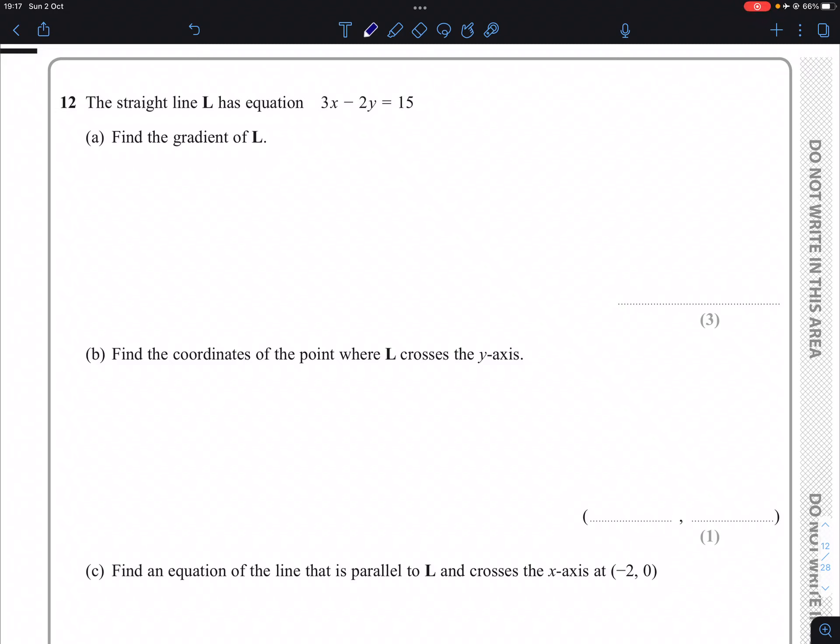Question 12. The straight line L has equation 3x - 2y = 15. Calculate or find the gradient of L.